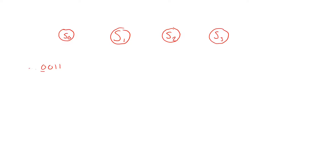When we are in state S0 it means we have not found the first zero we are looking for. So when we receive a zero we go to state S1, still outputting a zero. If we receive a one, we are still looking for our first zero, so we stay in S0. When we are in state S1 it means we have found one zero. If we find another zero we go to state S2. If we receive a one in state S1, we go back to state S0.